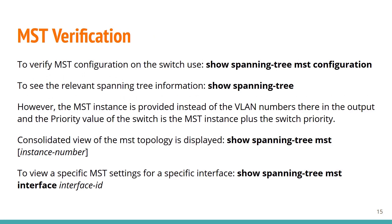MST verification. To verify MST configuration on the switch, use 'show spanning-tree MST configuration'. To see relevant spanning tree information, use 'show spanning-tree MST' — note that MST instance numbers appear instead of VLAN numbers, and the switch priority value equals the MST instance plus the switch priority. A consolidated view of the MST topology is shown with 'show spanning-tree MST', optionally filtered by instance number. To view MST settings for a specific interface, use 'show spanning-tree MST interface [interface ID]'.